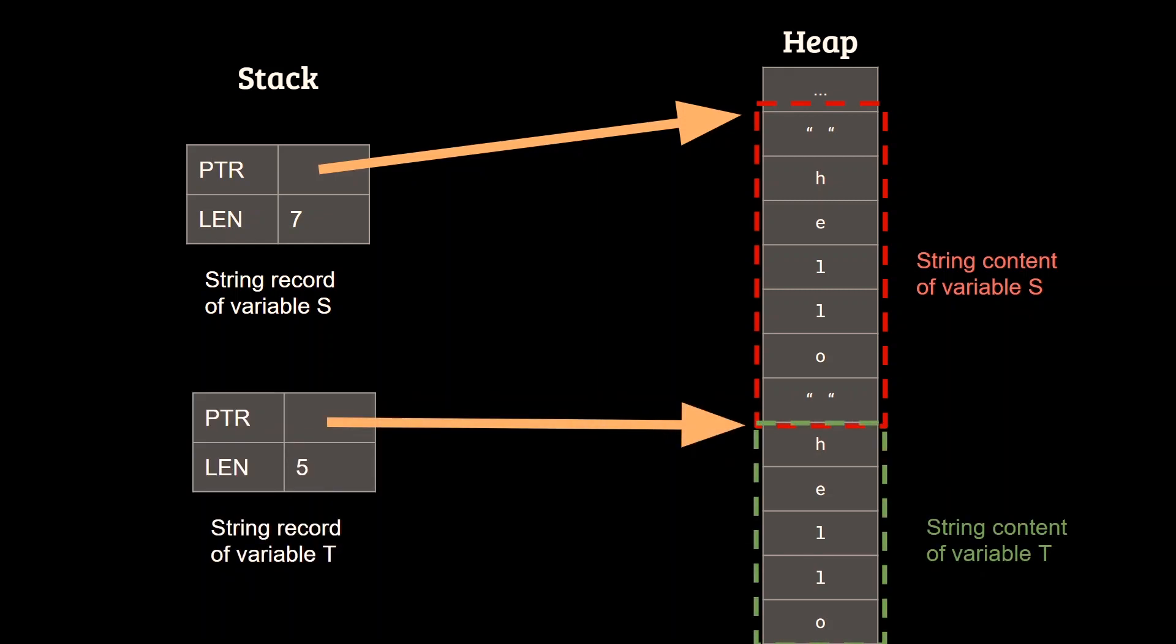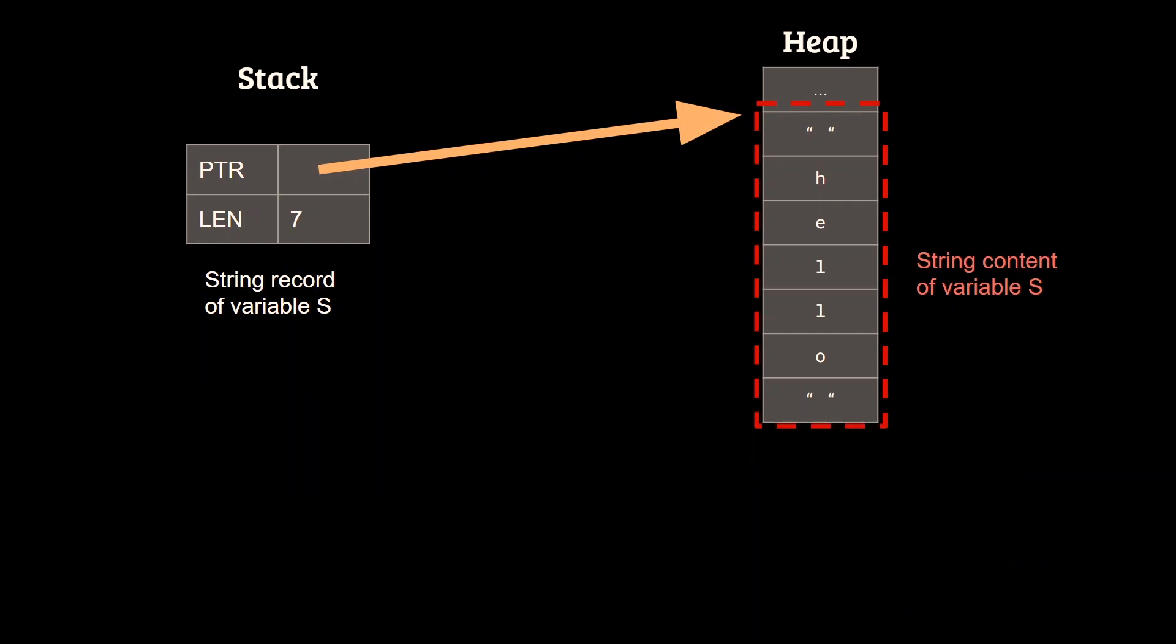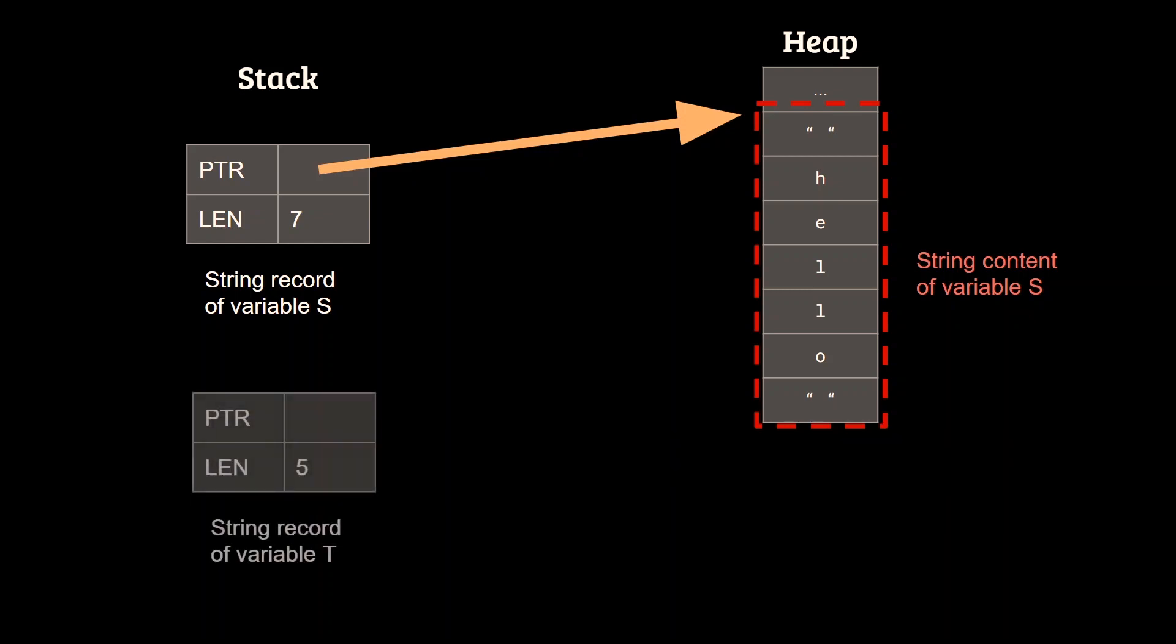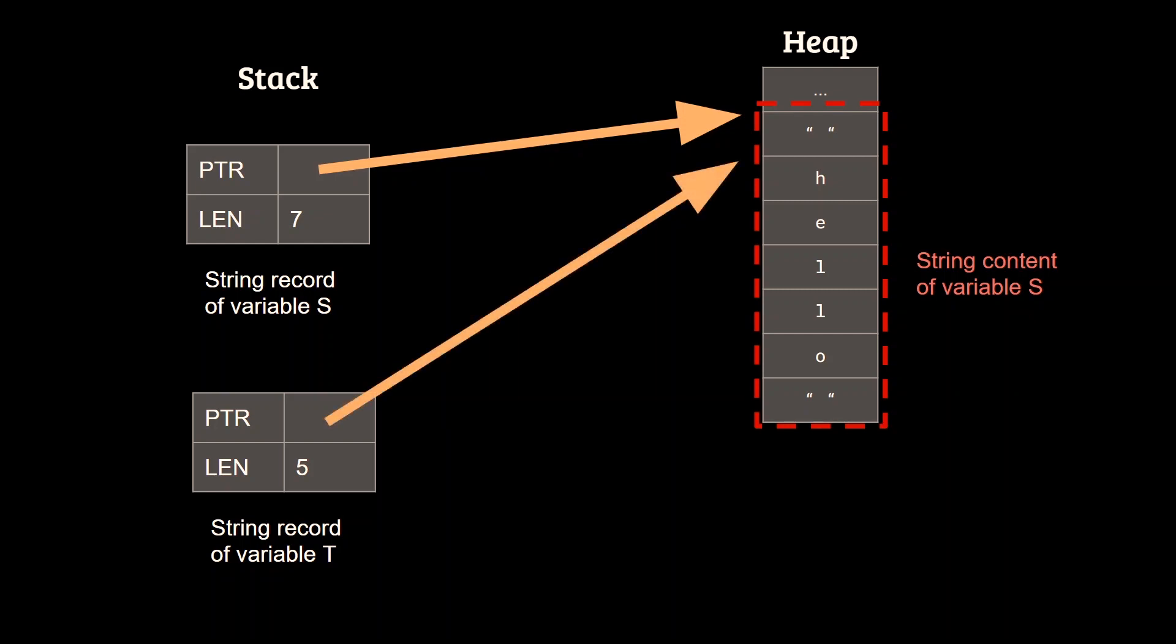This is where the Rust magic happens. If we assume that neither t nor s will be modified, and they are immutable, we can optimize the previous operation by simply creating another string record, and having the start index at the second cell of s, and having a length of 5 instead of 7.